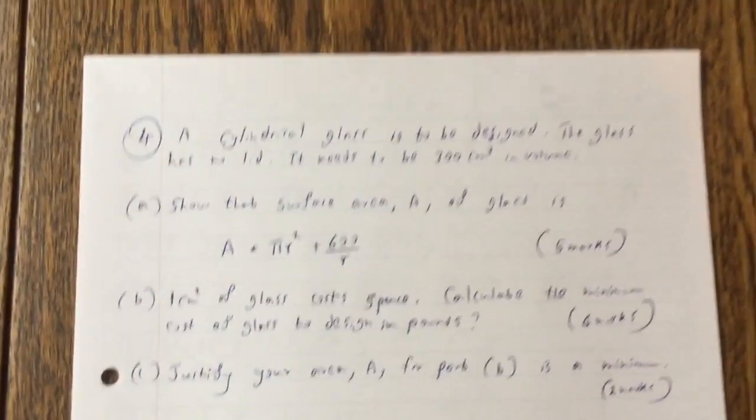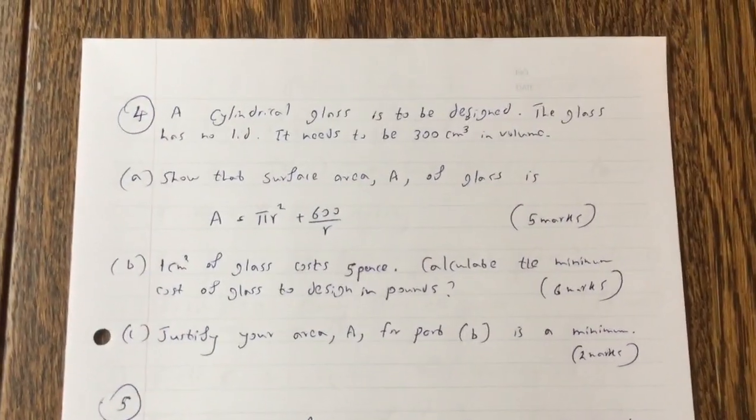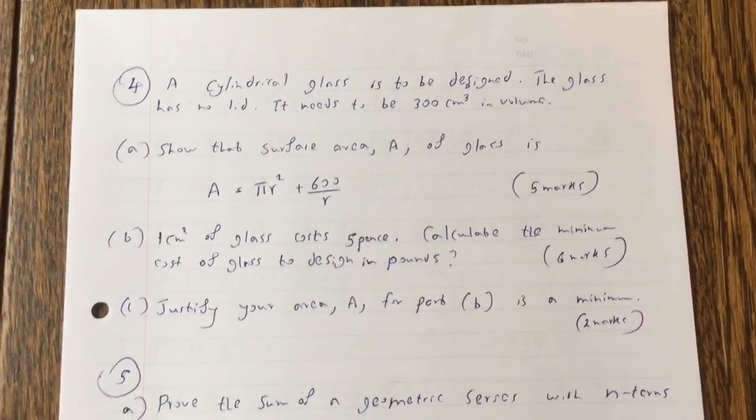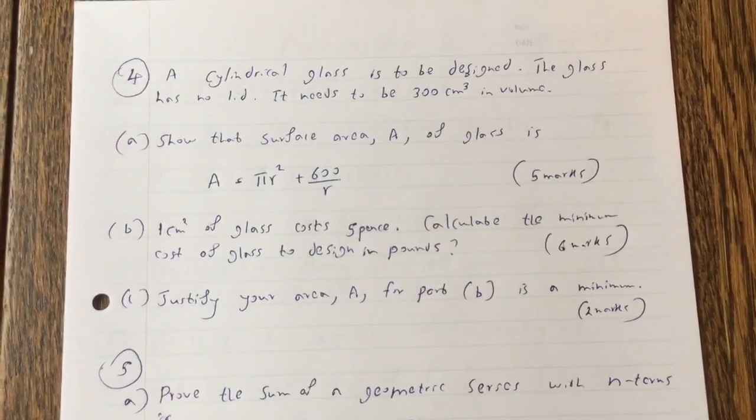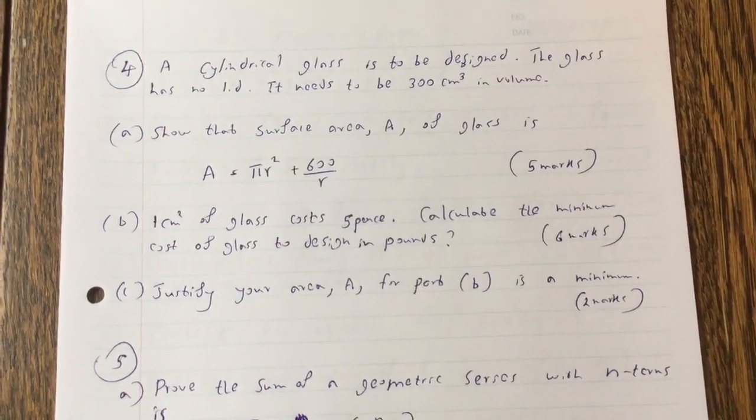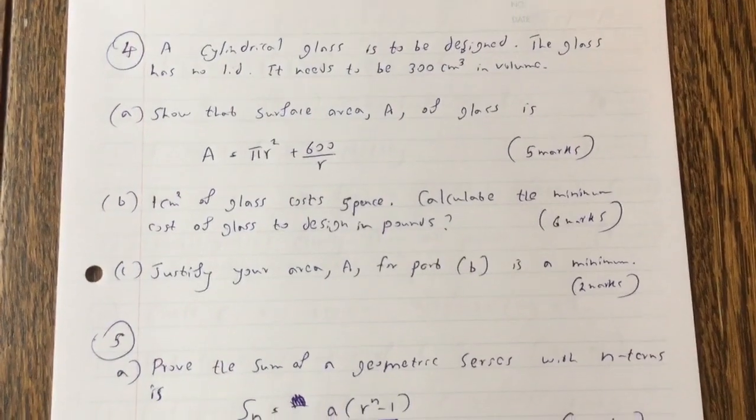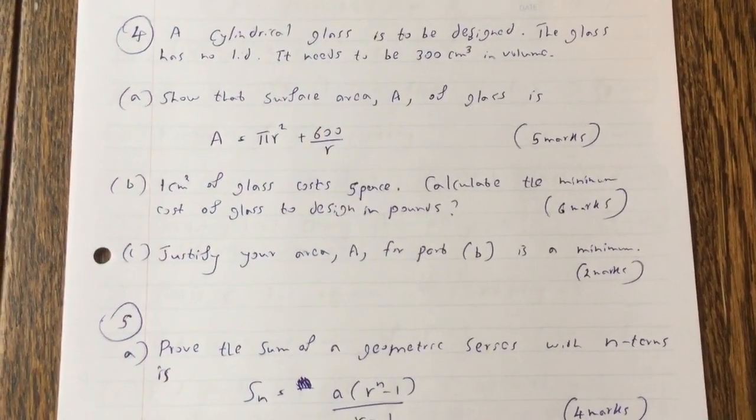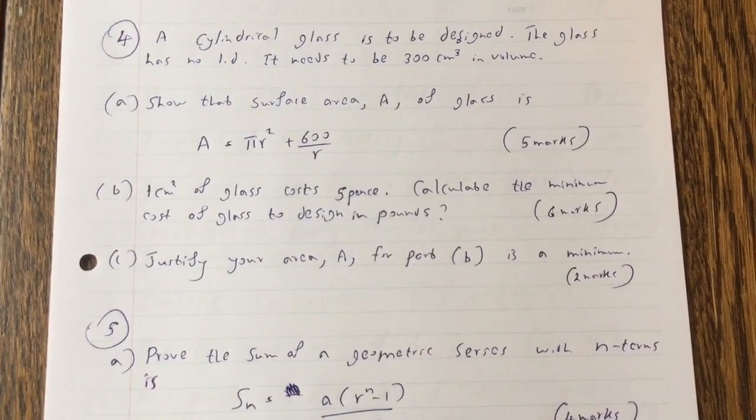So with that we go to question 4. A cylindrical glass is to be designed. The glass has no lid. It needs to be 300 cubic centimeters in volume. Show that the surface area A of glass is A equals pi R squared plus 600 over R.